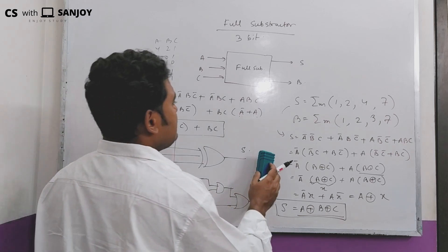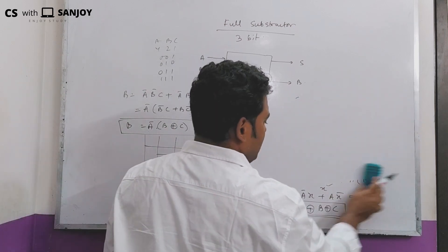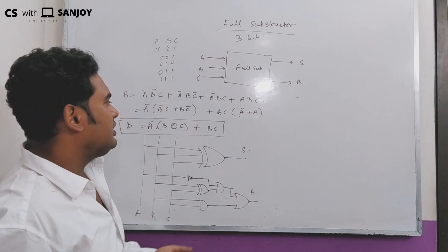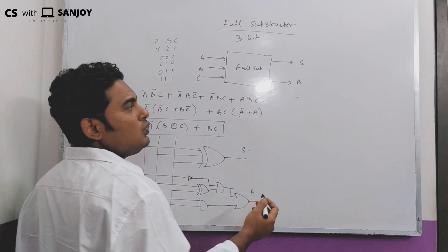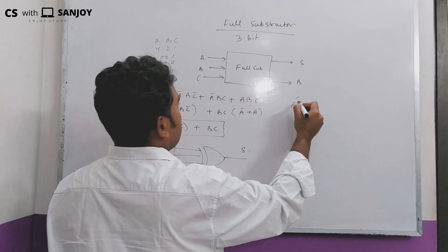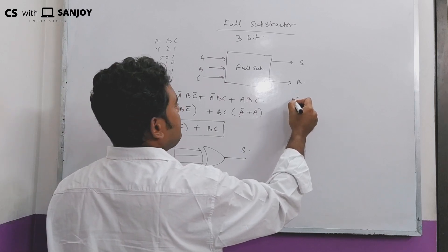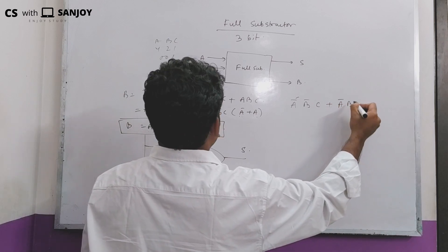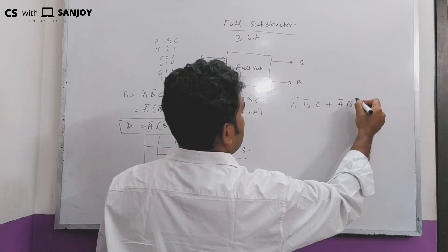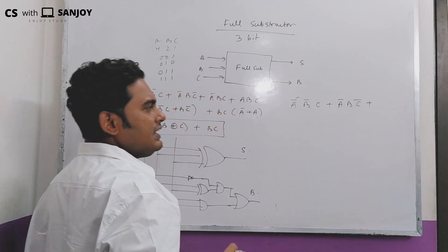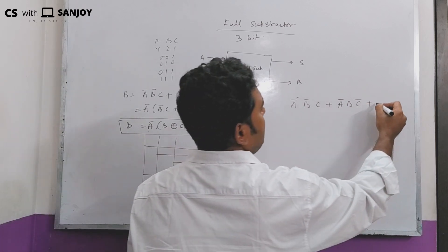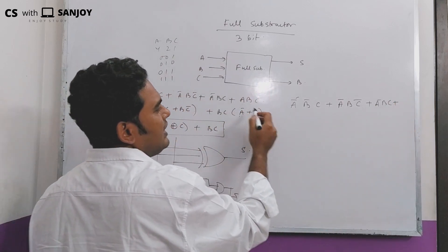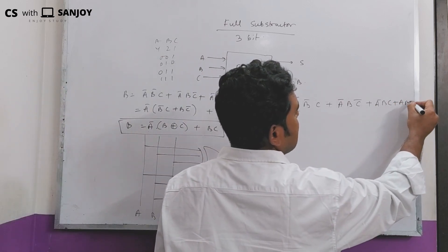If you want to build the full subtractor, we will use two half subtractors. Using two half subtractors: A-bar B C plus A-bar B C bar gives A-bar B C bar plus A-bar B C plus A B C.